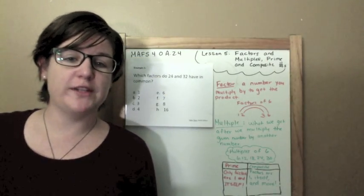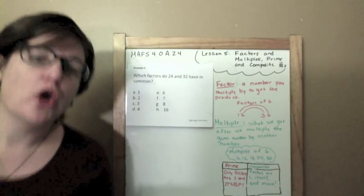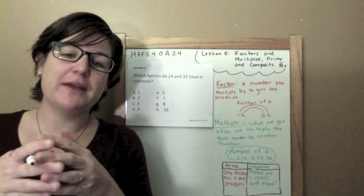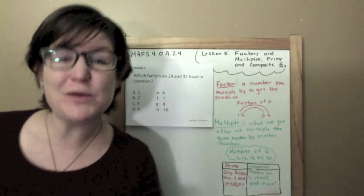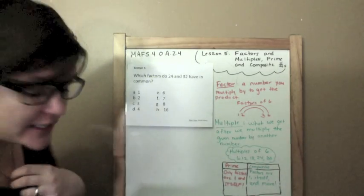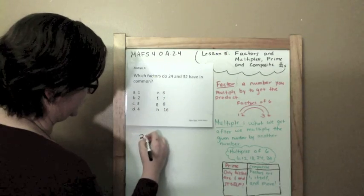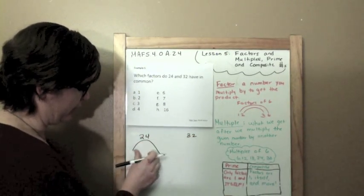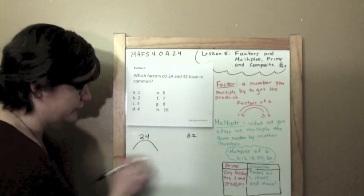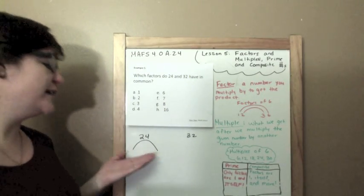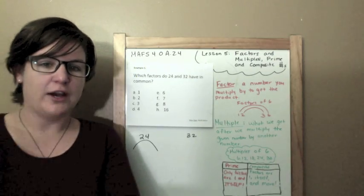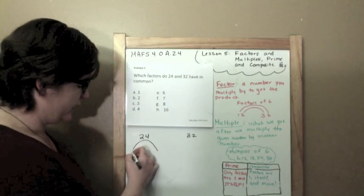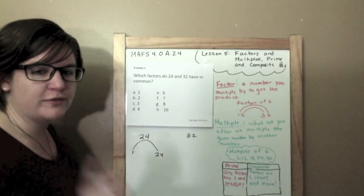Example number 5, this is a multi-select item. Which factors do 24 and 32 have in common? So, I need to make a factor rainbow for both and then see what ones they have in common. Let's do this thing. 24 and 32. Now, with prime and composite, I told you, you don't have to find all the factors, but if it's asking you to find the factors of 24 and 32, you need to find all the factors. So, let's go.